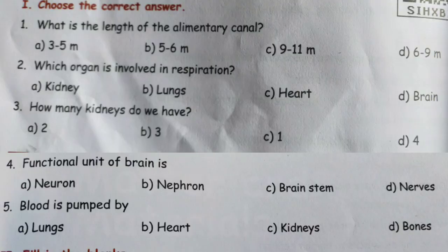Number 1, choose the correct answer. Question number 1: What is the length of the alimentary canal? Option A: 3 to 5 meters. Option B: 5 to 6 meters. Option C: 9 to 11 meters. Option D: 6 to 9 meters. The alimentary canal is our digestive system, and its length is 6 to 9 meters. Option D.